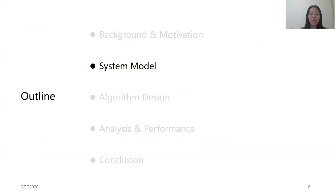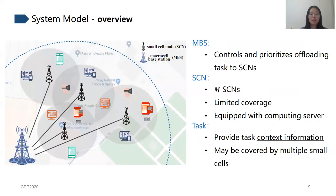Next, let's look at our system model. There is an MBS and some small cell nodes. The MBS controls and prioritizes offloading tasks to SCN. Each SCN has limited coverage and is equipped with a computing server. They can process tasks from wireless devices. Each task provides its task information, such as the set of input data, the set of output data, and so on. We call such information task context information.